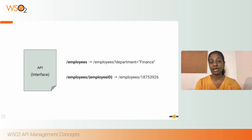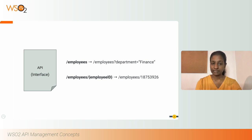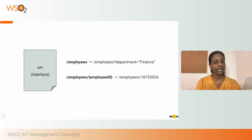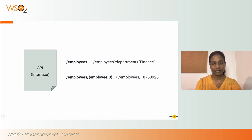Your actual backend API will have a certain contract that the users outside can consume. For example, your actual API will have a resource called /employees that can be used to retrieve the list of employees working for your organization. It can accept an optional query parameter called department so that you can filter employees based on that. You will also have a resource called /employees/{employeeId} to retrieve a specific employee. This is the interface to your API.